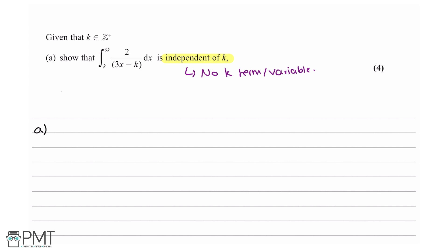So that's going to direct us on how we need to present it. To integrate what we have, I'm going to use a rule which says the integral of a constant a over bx plus c with respect to x equals a over b times the natural log of bx plus c.